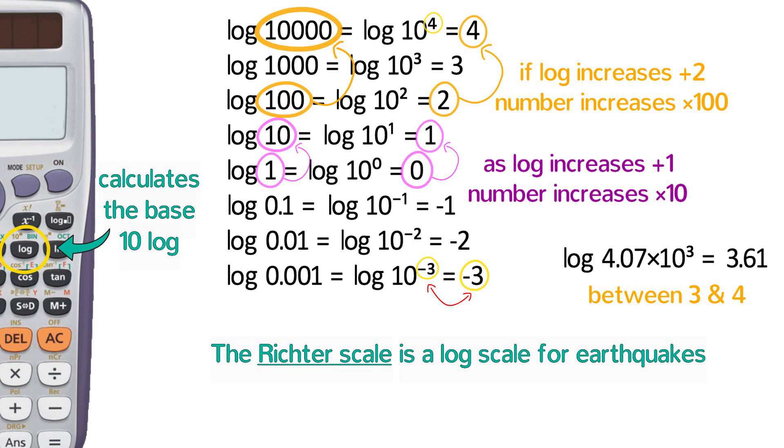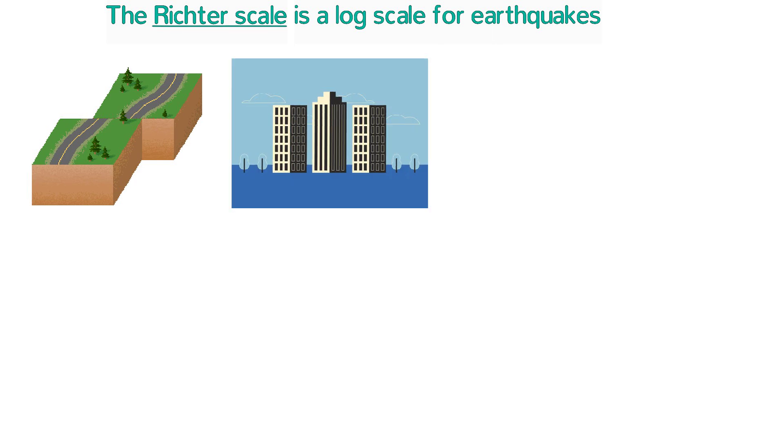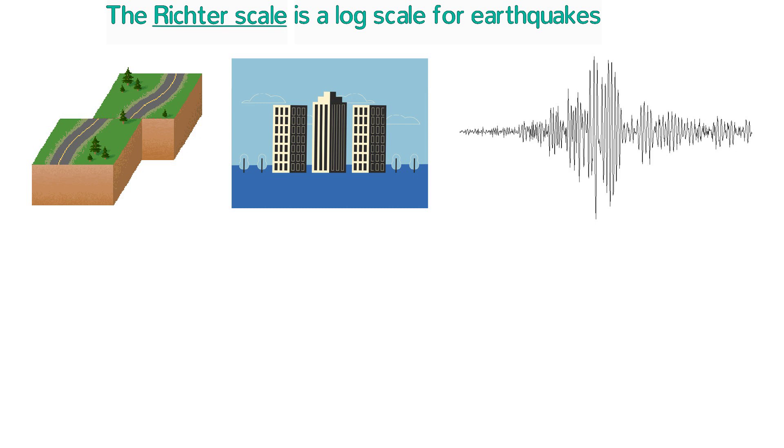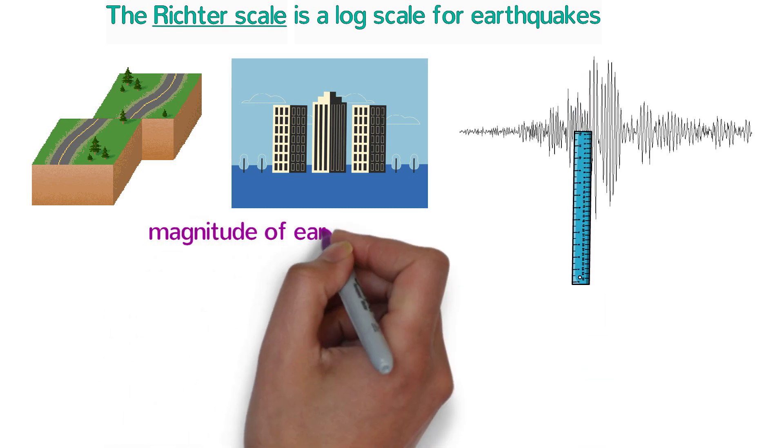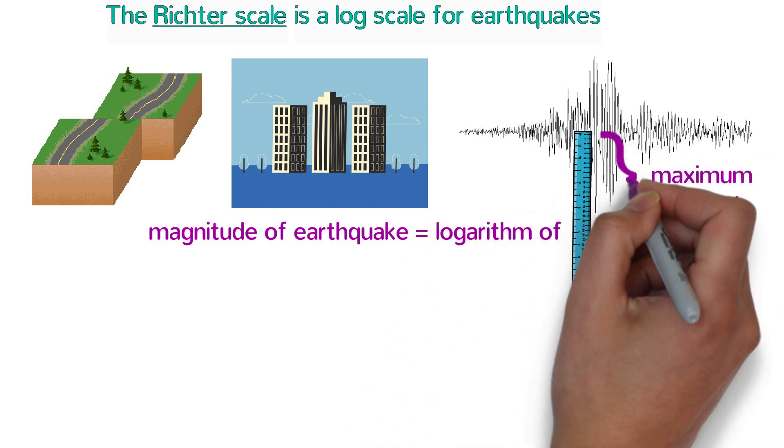An earthquake typically occurs when tectonic plates on the Earth's crust move, causing the Earth to shake. The energy of that shaking travels through the Earth in seismic waves that can be detected and recorded. The magnitude of the earthquake was originally defined as the logarithm of the maximum amplitude in micrometers.